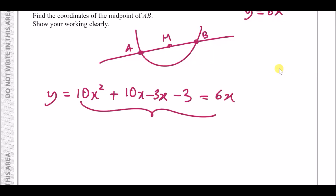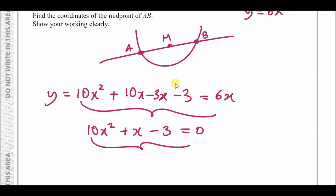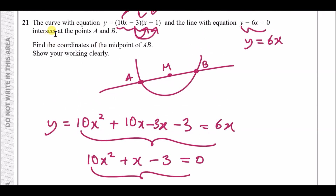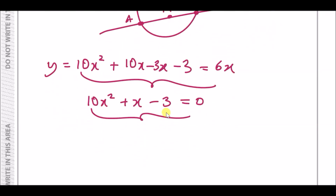Move everything to the left-hand side and set equal to zero. Collecting like terms: 10x squared, then 10x minus 3x minus 6x gives plus 1x, and minus 3, all set to zero. Now we need to factorize this quadratic equation.